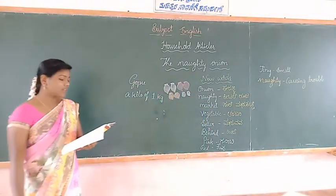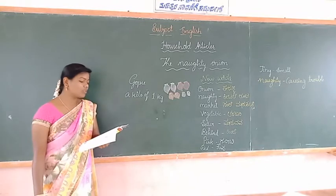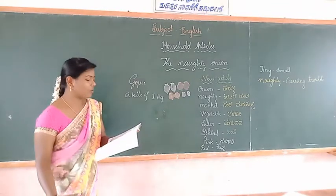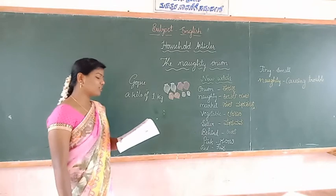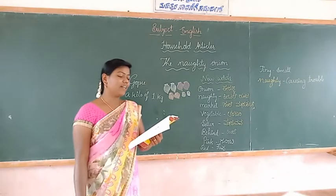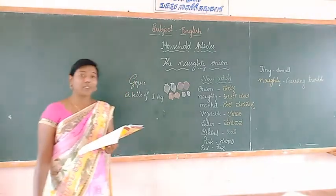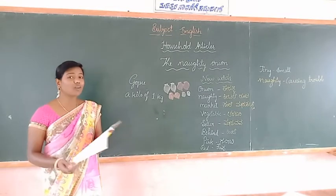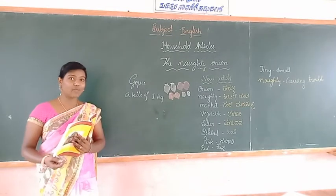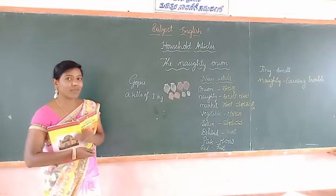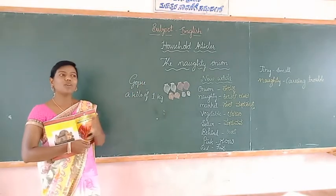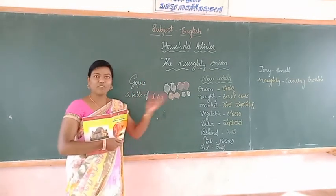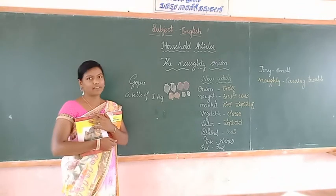The onions were some big, some small, some really tiny, some pink, some red, and some almost white. Dear students, tiny, pink, red, and white — these are all called describing words, which are describing the onion. He bought a kilo of onions from the vegetable seller.